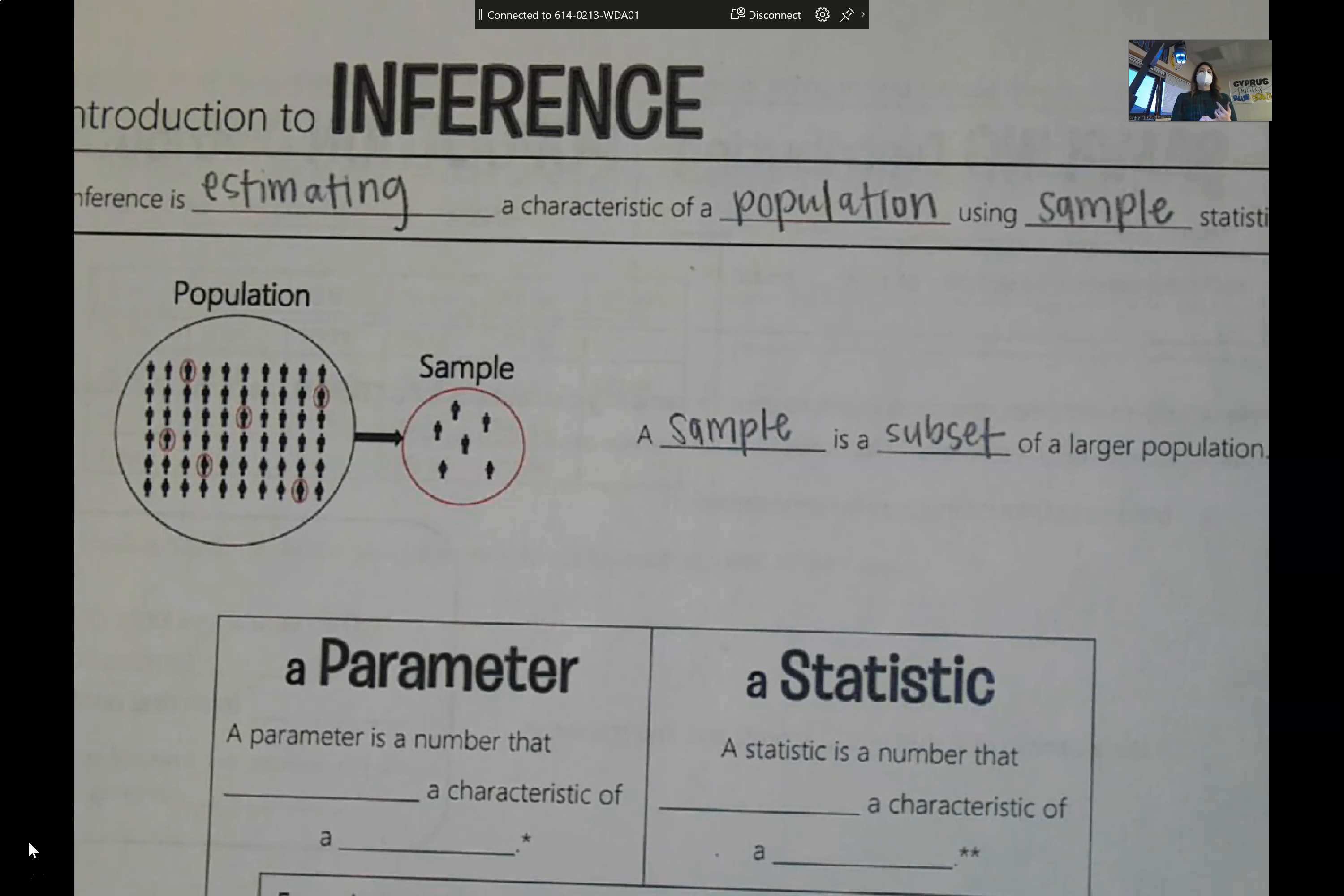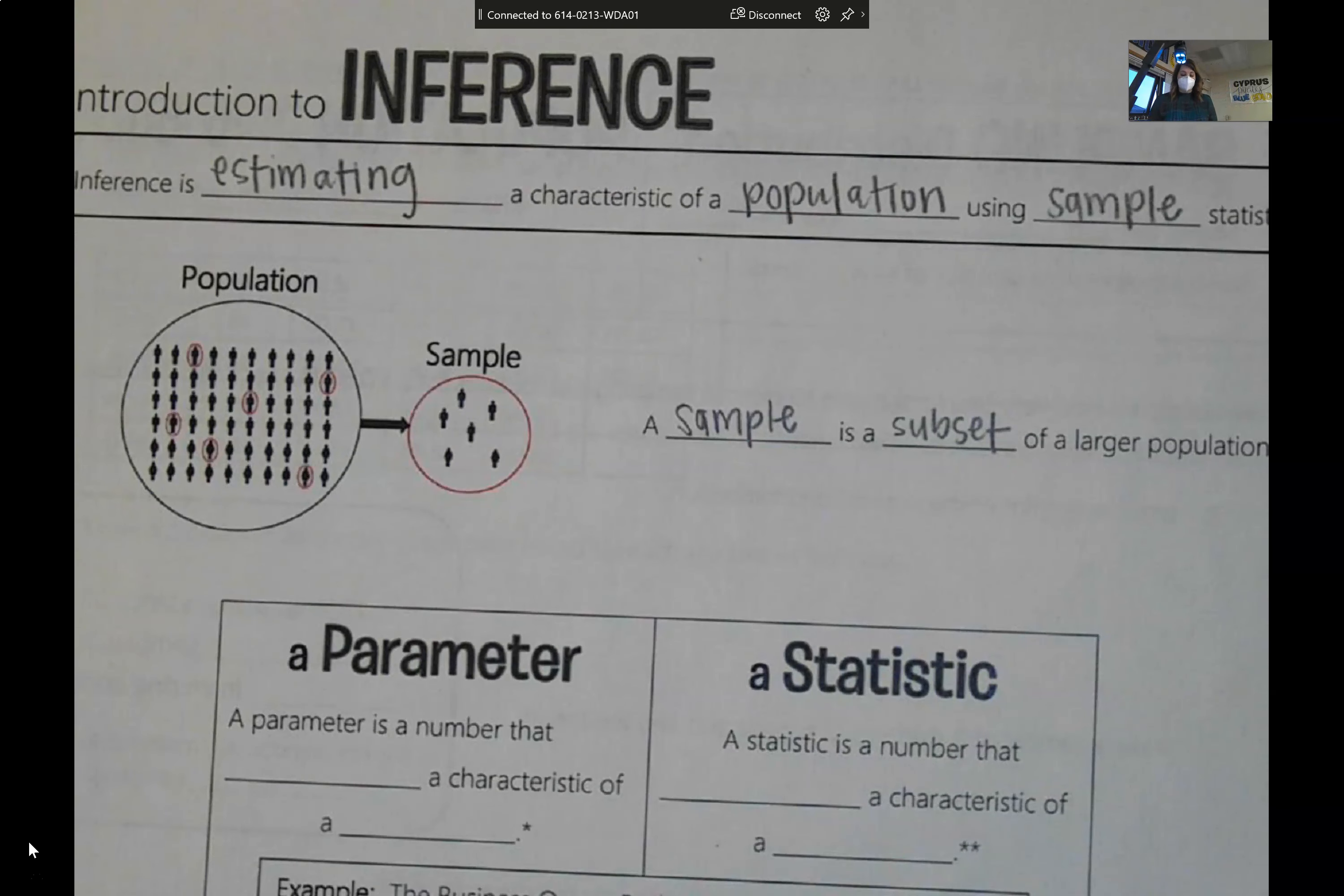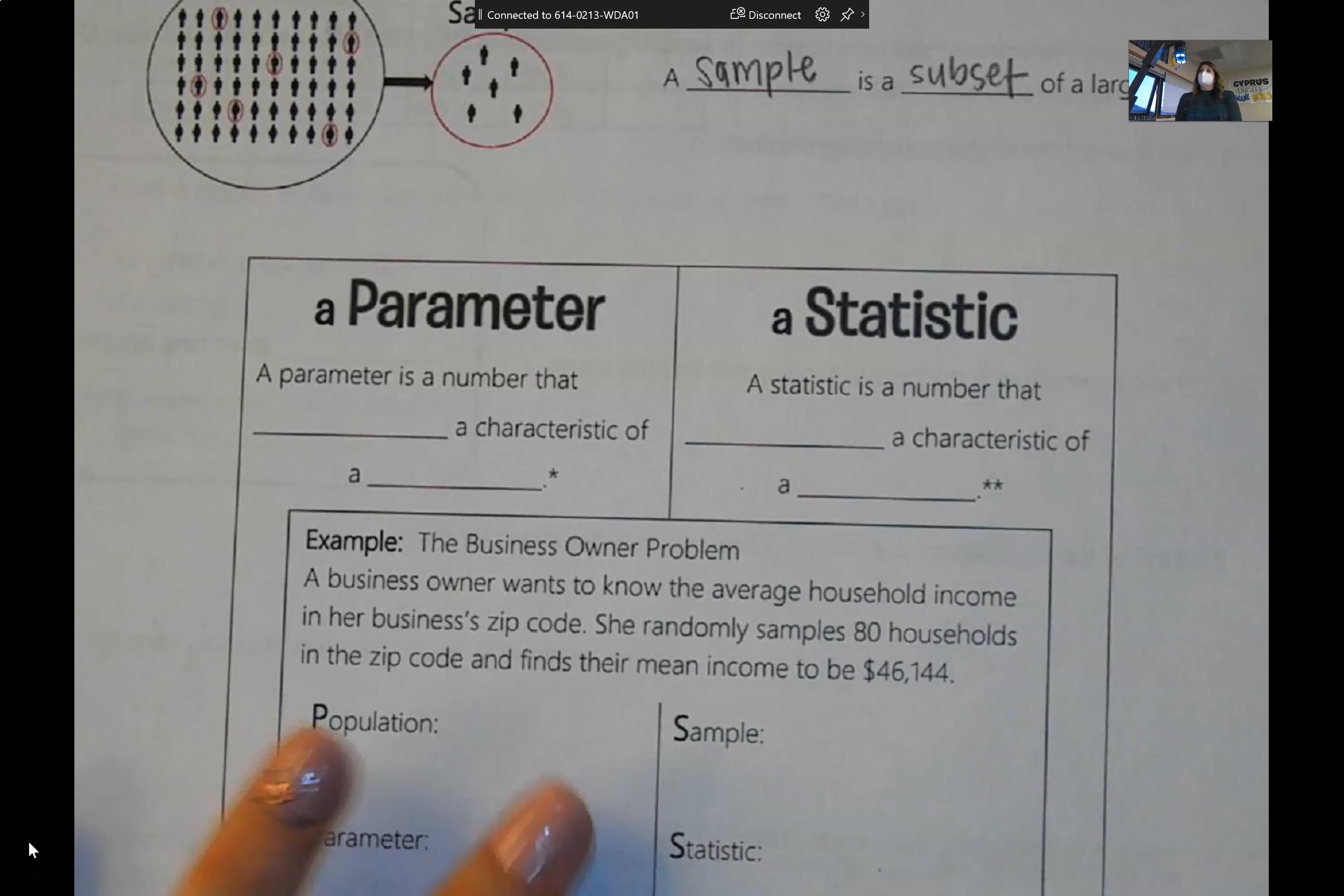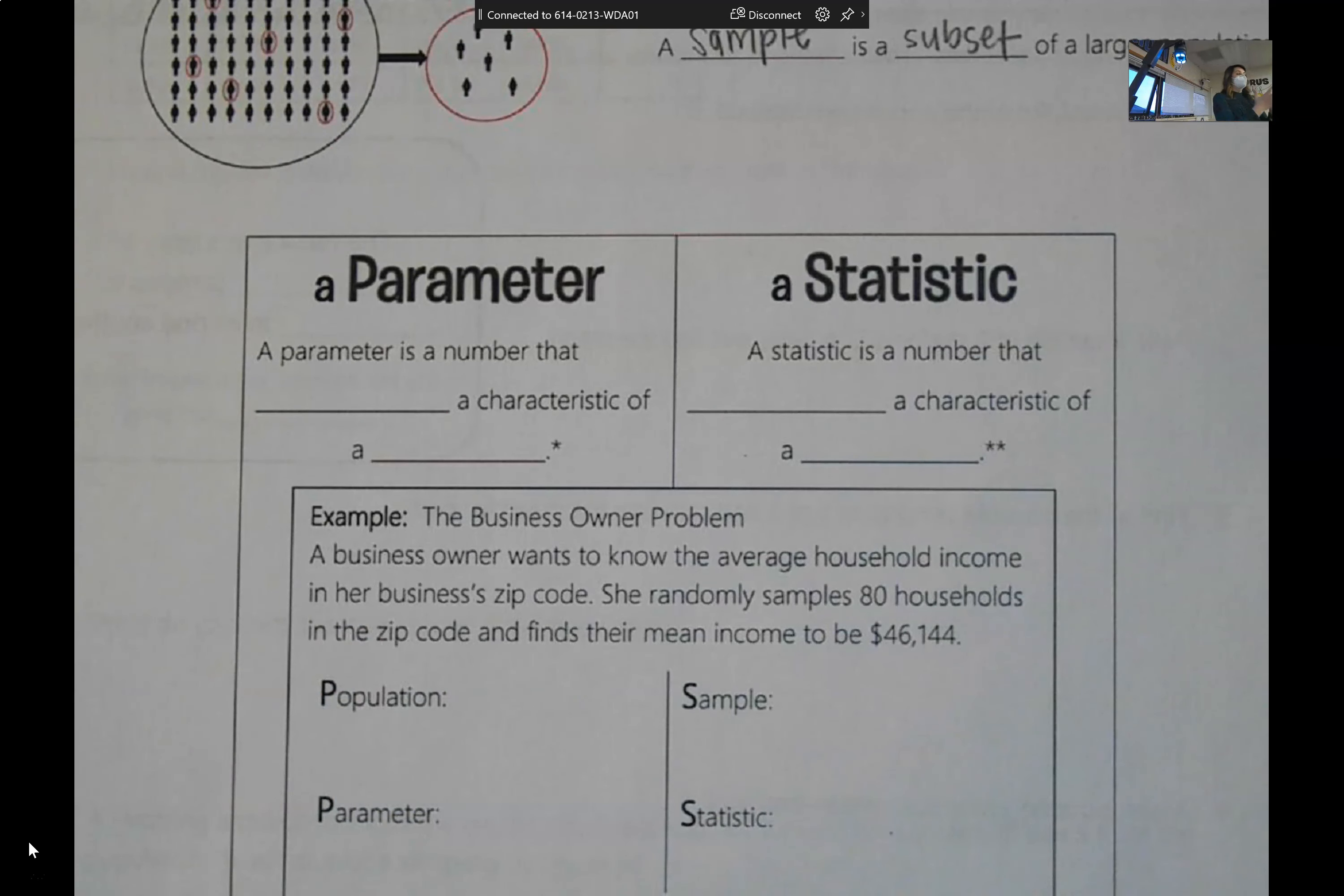We could find the average income. We could find the range of the income. We could find the IQR of the income. We could estimate the maximum income or the minimum income. So all of the statistics that we talked about in unit one, like the five number summary. But that five number summary, we can estimate those things about a population. When we do that, we have to know the difference between what the population number is and what the sample number is. So those have their own names.